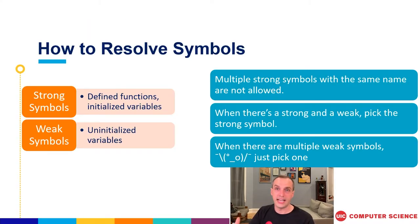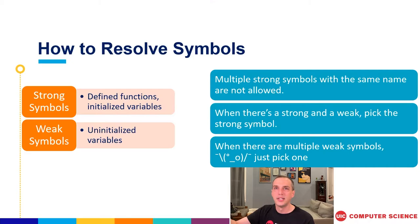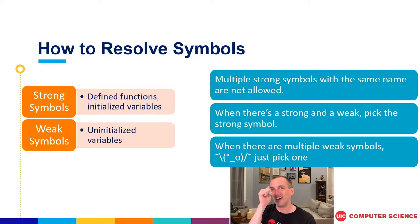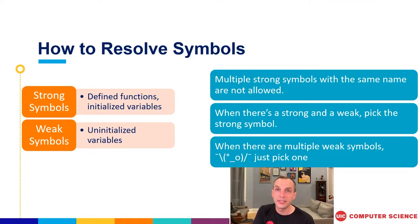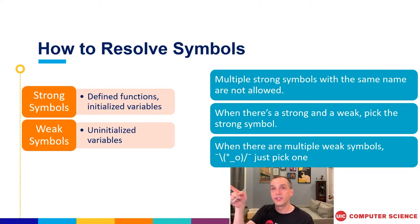We've been talking about symbols as things we know we'll eventually need to resolve. We're eventually going to do that relocation process of finding where each symbol lives and referring to it in our assembly code. But we're not there yet — first we need to do the resolution process. In the best-case scenario, resolution is super easy: we've got a bunch of references, then one definition, and the linker says 'this definition goes to these references.' Done.